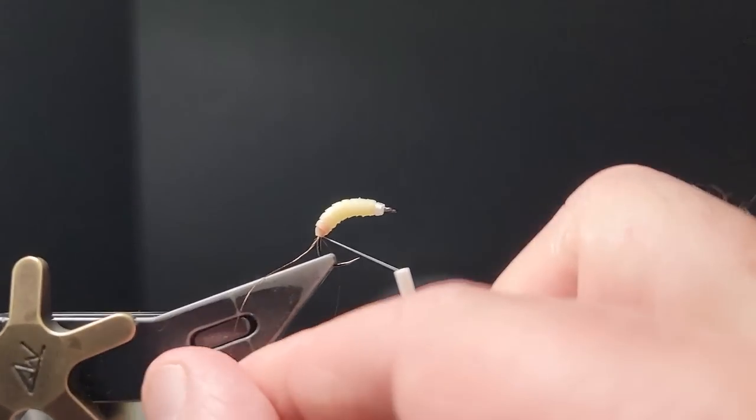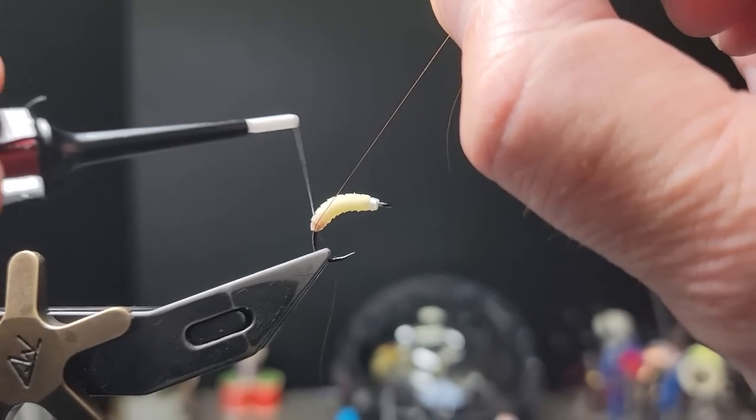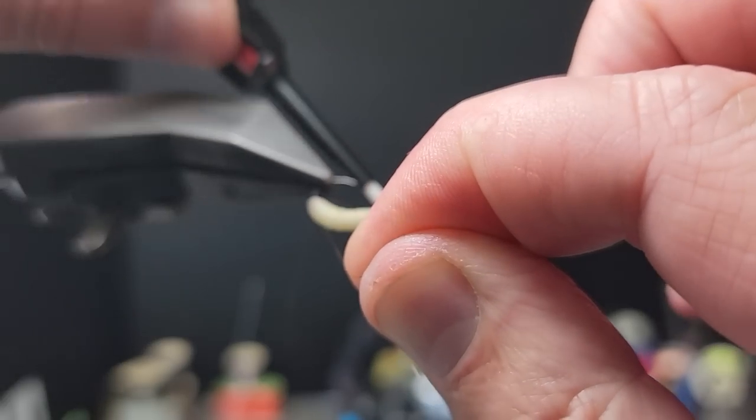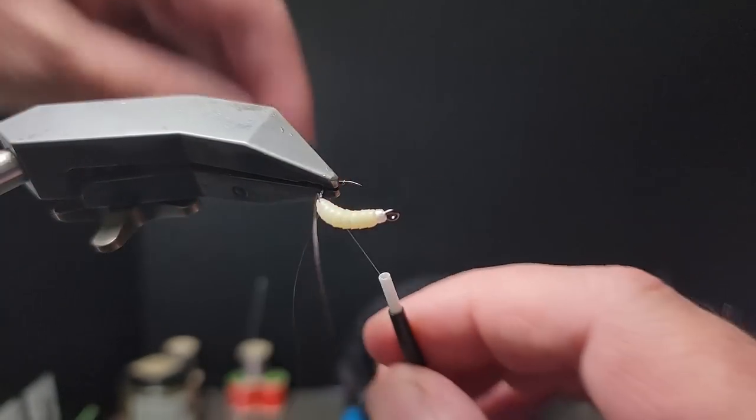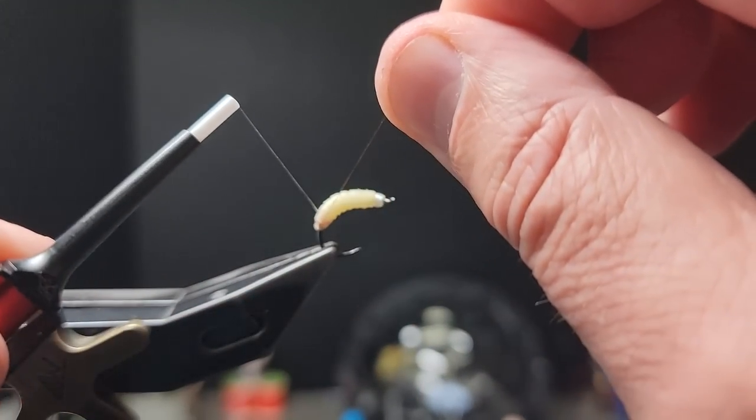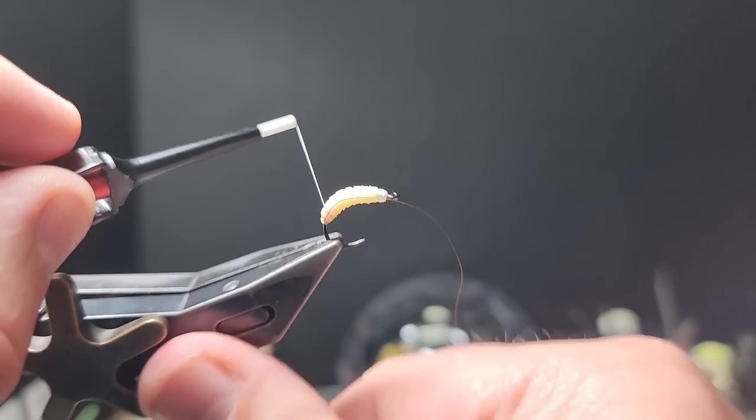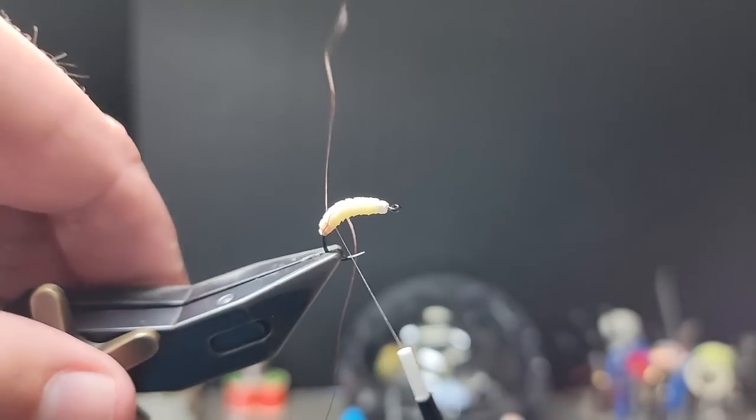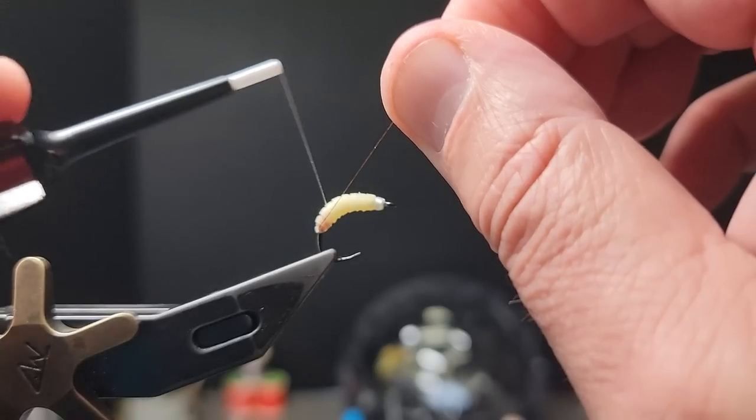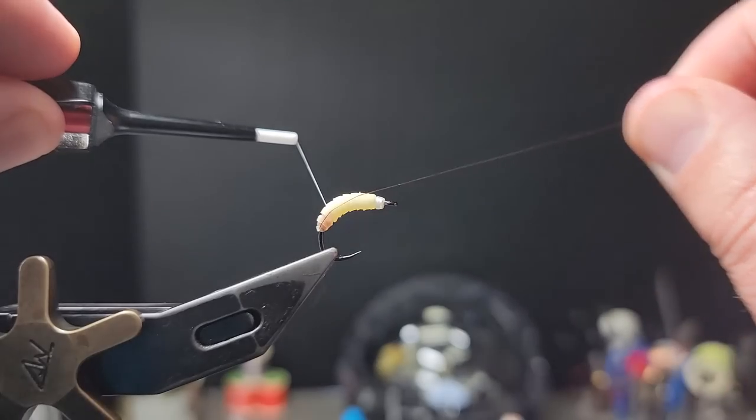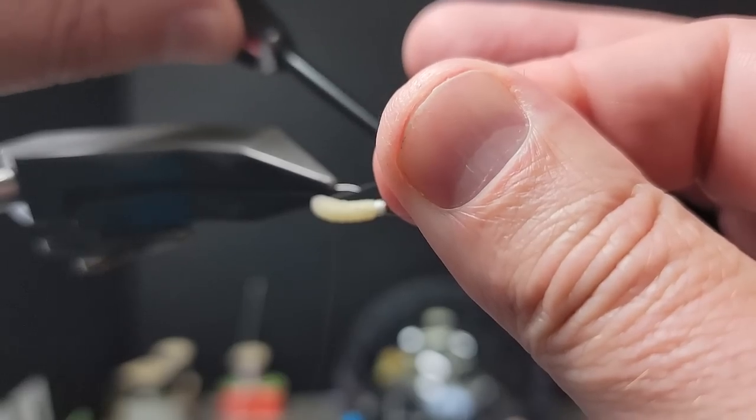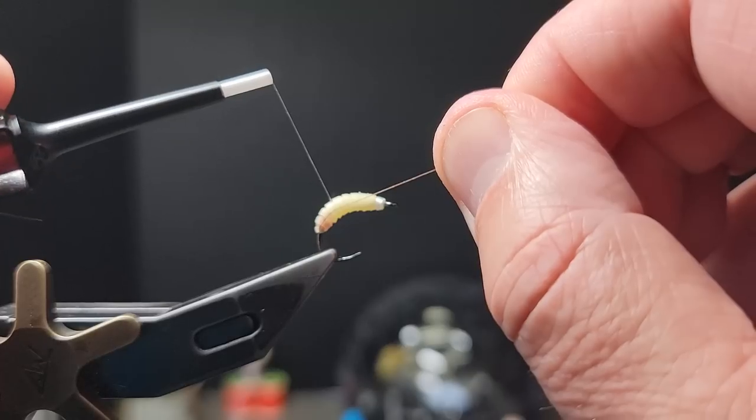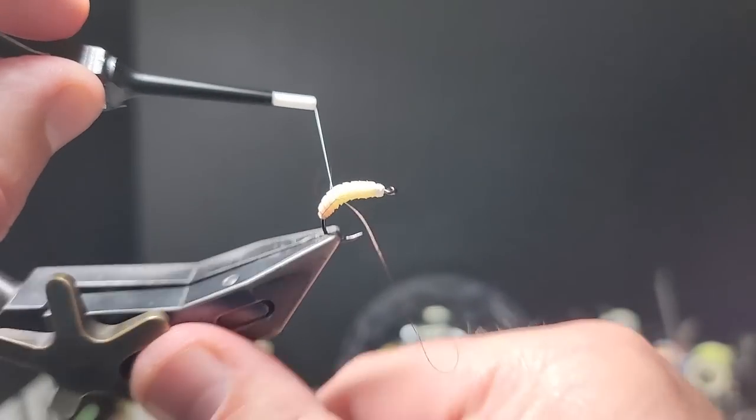So now we're going to add the lateral line, and we're going to take that mono and we're going to cinch down on each side at basically where the segment begins toward the hook eye. Probably doesn't make sense, but you can see it I imagine.